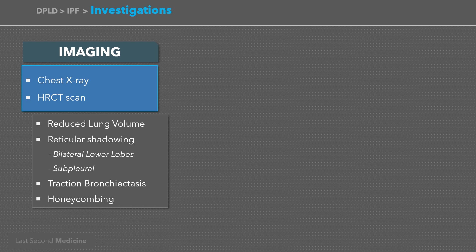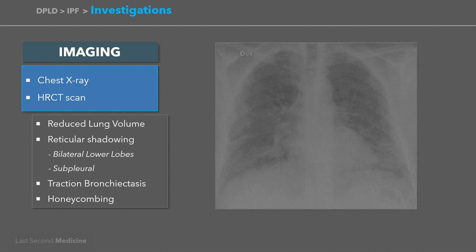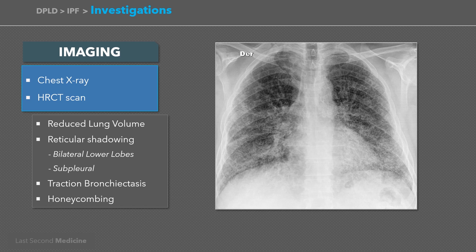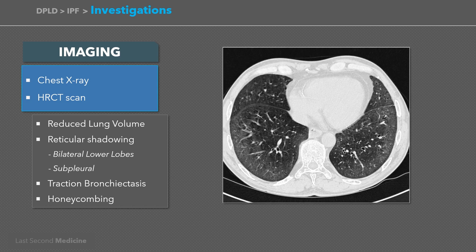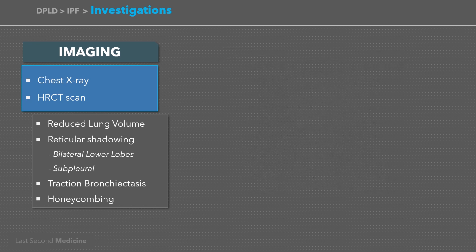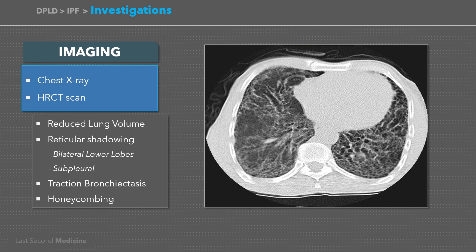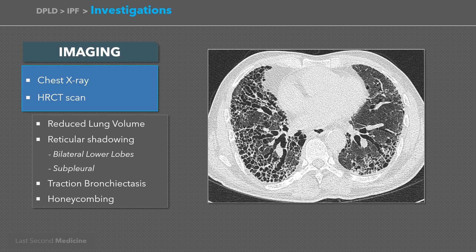Recourse to biopsy is seldom necessary. You can see the reticular pattern in bilateral basal lobes and subpleural ground glass appearance. Here you can see the traction bronchiectasis and subpleural ground glass appearance. And here you can see the typical honeycombing in advanced disease.